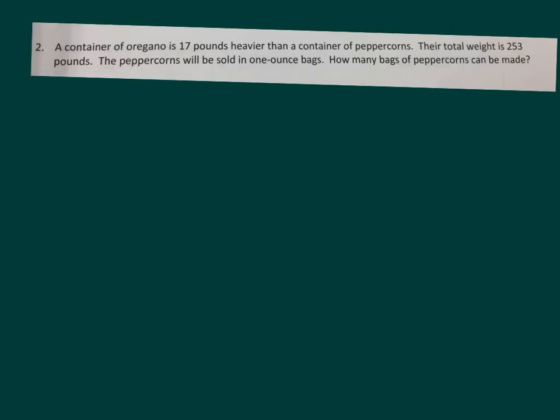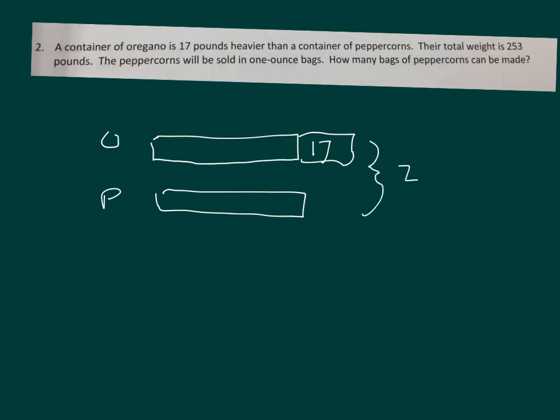Let's start by working out this problem. We look at the oregano. There's oregano. And the oregano is 17 pounds heavier than the peppercorns. So if this represents the peppercorns, 17 more. 17 pounds more. And then all together, there's 253 pounds for the oregano and the peppercorn. See that right there? Total weight is 253 pounds.